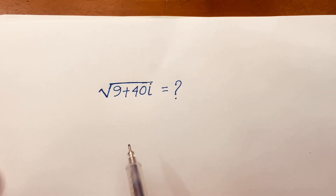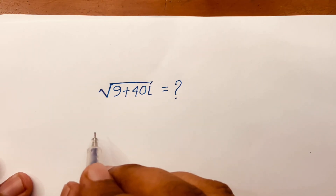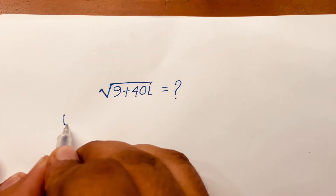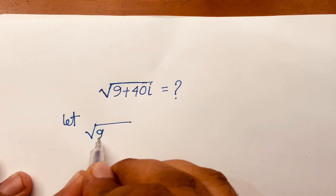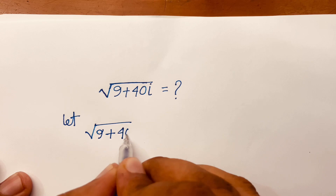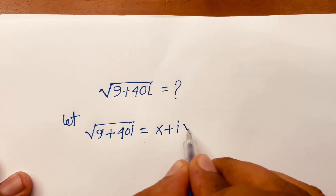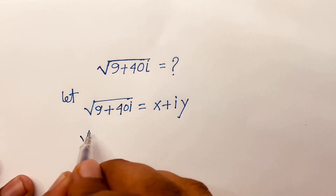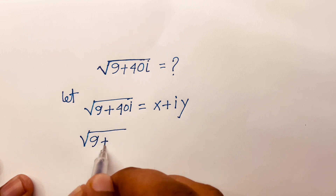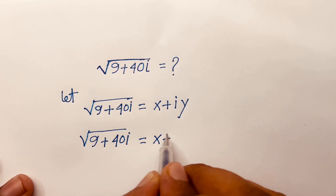How to solve square root of 9 plus 40i? So square root of a complex number. First of all, let square root of 9 plus 40i be equal to x plus iy.